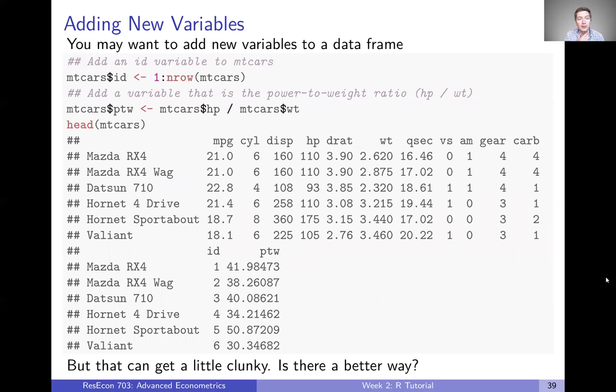So for example, you may want to add new variables to a data frame. A lot of times we want to manipulate data frame variables to add new ones, add a couple of variables together or divide or something. In this case, we can create new variables in a data frame by just creating a new object, which is mtcars dollar sign whatever we want the name of the new variable to be. That's going to reach into the mtcars data frame and add this new variable called ID.